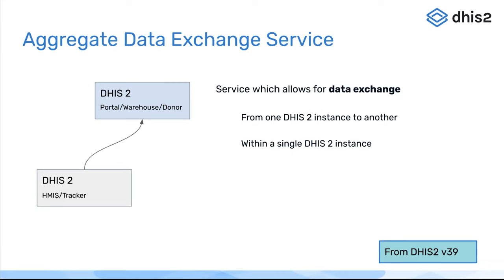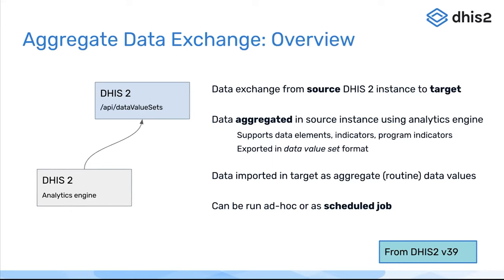I'll also talk about the functionality of transforming data within a particular DHIS2 instance. This is incredibly powerful because it supports tracker data as well. You can actually transform a program indicator into a data value in the DHIS2 instance, and also do that across the boundary between different DHIS2 instances. You could submit the program indicator output from data collected in the tracker data model, and put that into an aggregate data model within the same instance or in another instance upstream, where it can be compared with other data without needing access to the individual-level data.